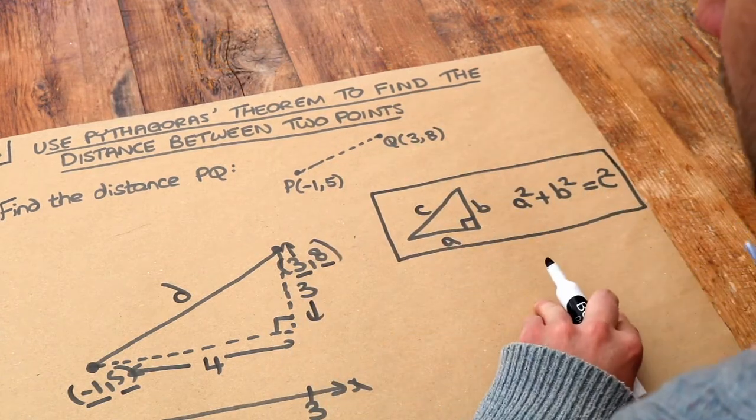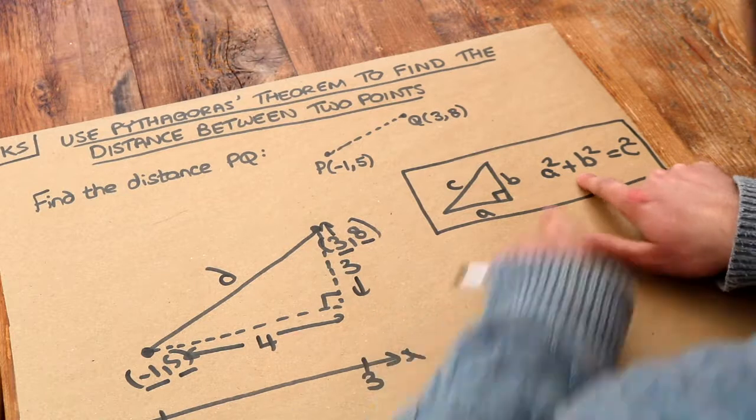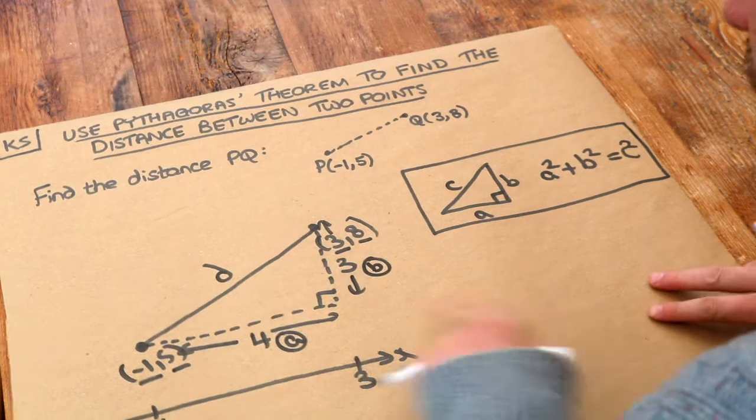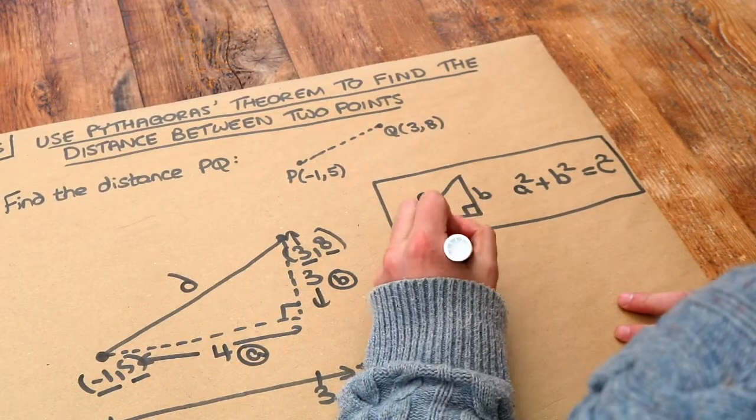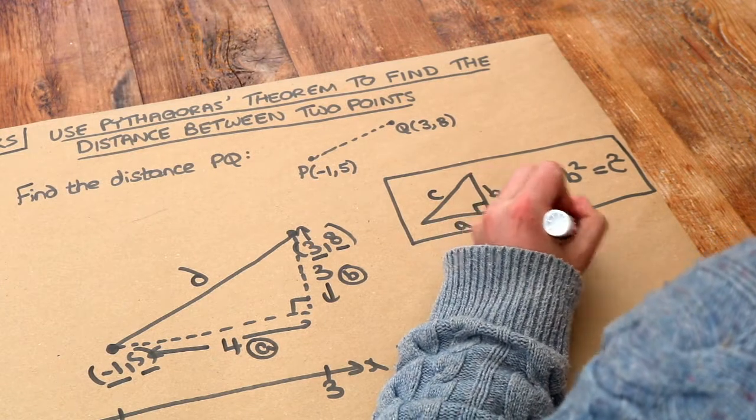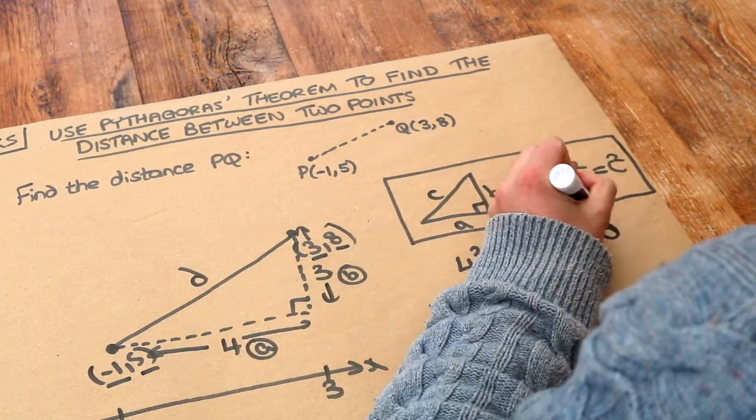So let's substitute our lengths into Pythagoras theorem. Well, let's call that A and that B and that's your C. So we've got A squared, which is 4 squared, plus B squared, which is 3 squared, is equal to D squared, the hypotenuse squared.